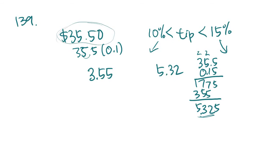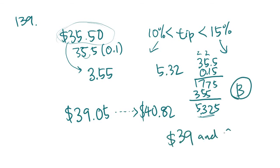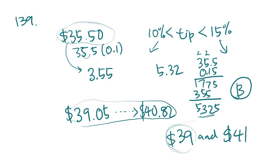$35.50 plus $3.55 equals $39.05 — that's the lower end of the range. The most they could tip and pay total is $35.50 plus $5.32, which equals $40.82. When you look at the answer choices, the answer is B, which gives the range $39.41 to $40.82, and both $39.05 and $40.82 fall within that range.